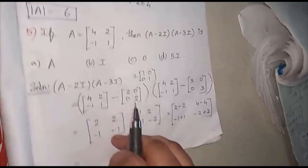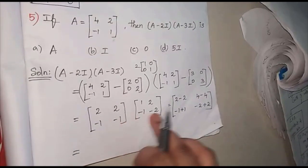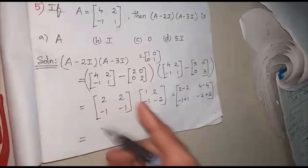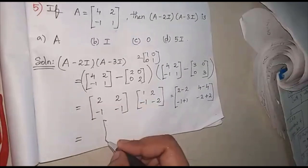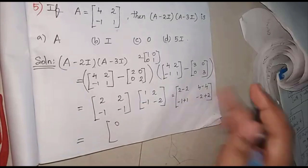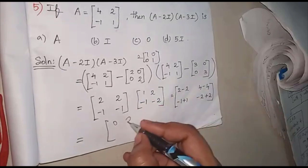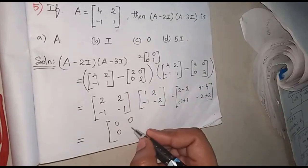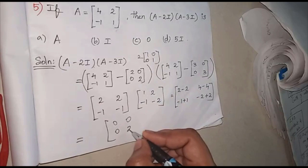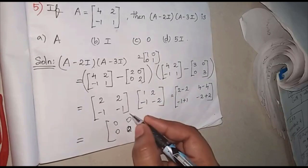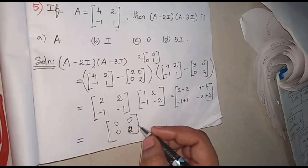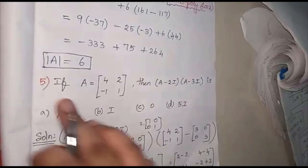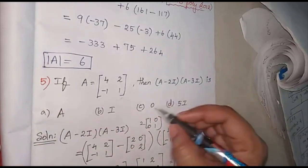So we can solve this. Multiplying out the terms: 2 minus 2 gives 0, 4 minus 4 gives 0, minus 1 plus 1 gives 0, minus 2 plus 2 gives 0. So the answer is the null matrix — the zero matrix. The answer is C.